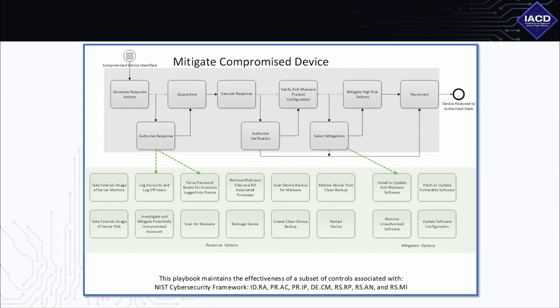Here's an example playbook on mitigating a compromised device. A playbook is first and foremost a set of process-oriented steps that enable an organization to meet the requirements specified in its policies and procedures. It represents a general security process at its most basic level, which means a playbook can be implemented in a completely manual fashion or increasingly automated as appropriate for an organization. Playbooks are written for a human to understand, not a machine — you and I are the target audience.